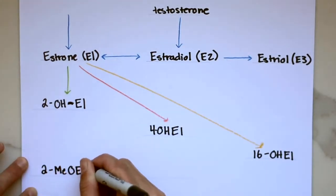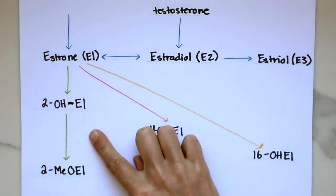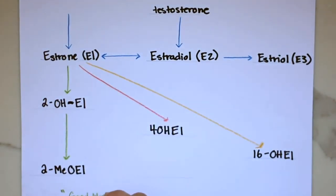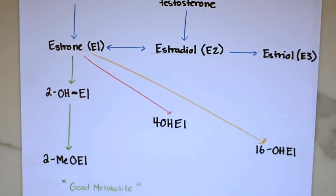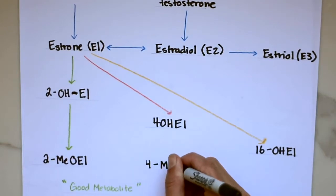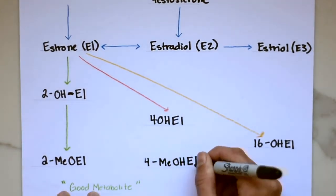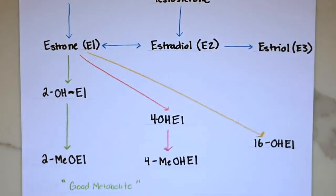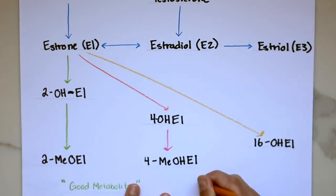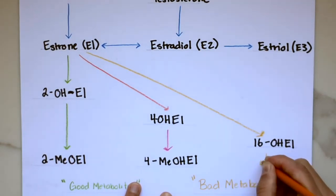The 2-hydroxyl metabolite pathway is considered the best as it creates a weak metabolite that has the lowest risk for cancer. The other two pathways, the 4-hydroxyl and 16-hydroxyl metabolite pathway, produce more potent estrogenic metabolites. And the 4-hydroxyl metabolite in particular is associated with a higher risk of breast and endometrial cancer.